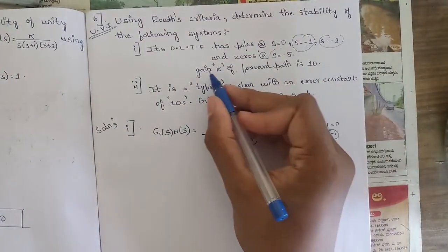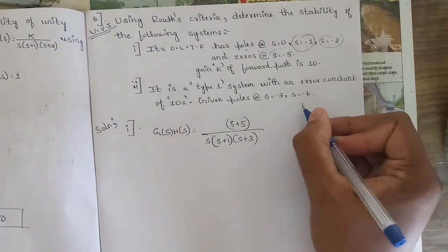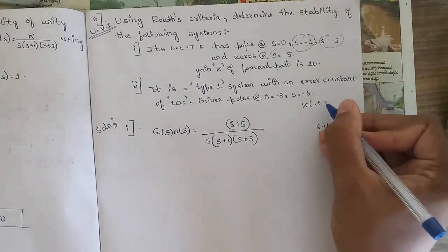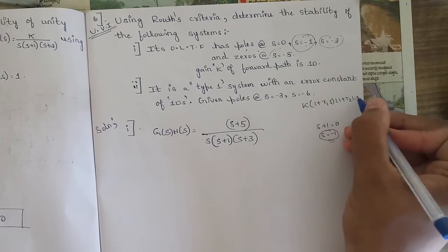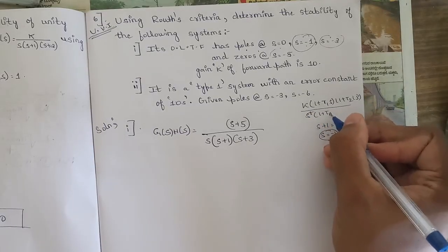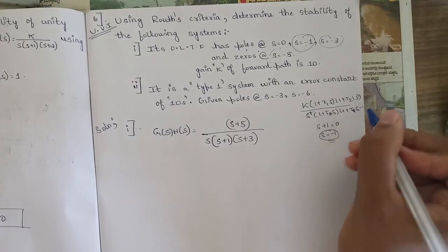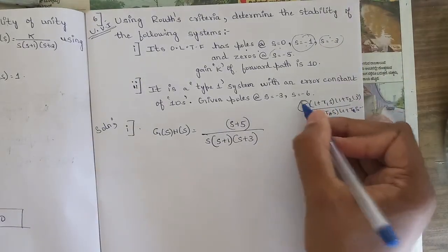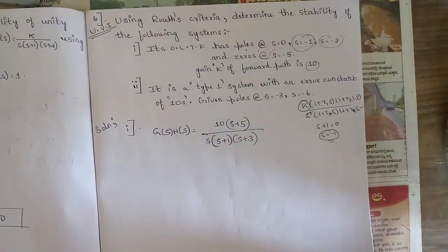For the zeros, we equate the numerator to zero: s = −5 gives factor (s+5). Including the forward gain K = 10, the open loop transfer function becomes: G(s)·H(s) = 10(s+5) / [s(s+1)(s+3)].